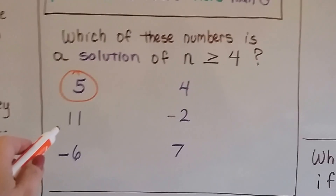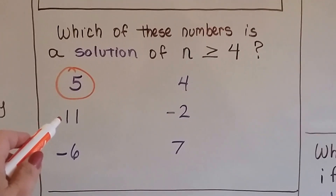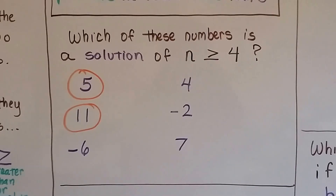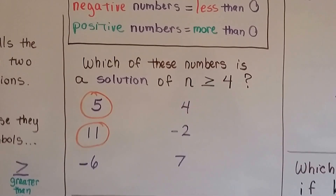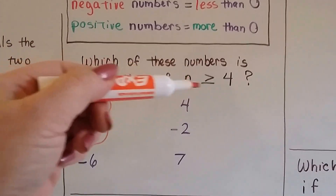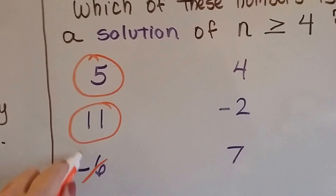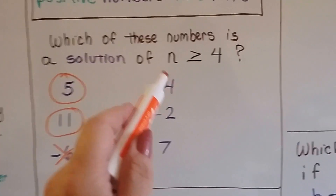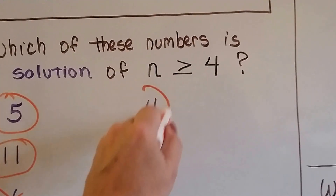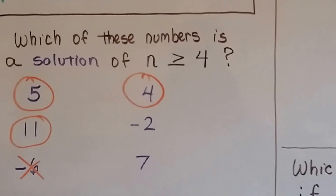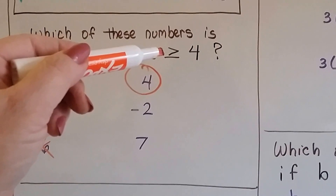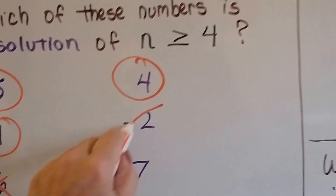How about 11? Is 11 greater than or equal to 4? Yes, 11 is greater than 4. How about negative 6? Is negative 6 greater than or equal to 4? Well, negative numbers are less than 0, and 0 is not greater than 4, so this one is not a solution. How about 4? Is 4 greater than or equal to 4? It's equal to it, so that is a solution. How about negative 2? Negative numbers are less than 0, and 0 is not greater than 4, so this is not a solution.